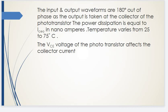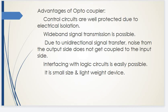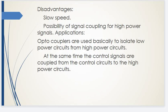Advantages of Optocoupler: The control circuit is well protected due to electrical isolation. Wideband signal transmission is possible due to unidirectional signal transfer. Noise from the output side does not get coupled to the input side. Interfacing with logic circuits is easily possible. It is small in size and lightweight. Disadvantages: Slow speed and possibility of signal coupling for high power signals.